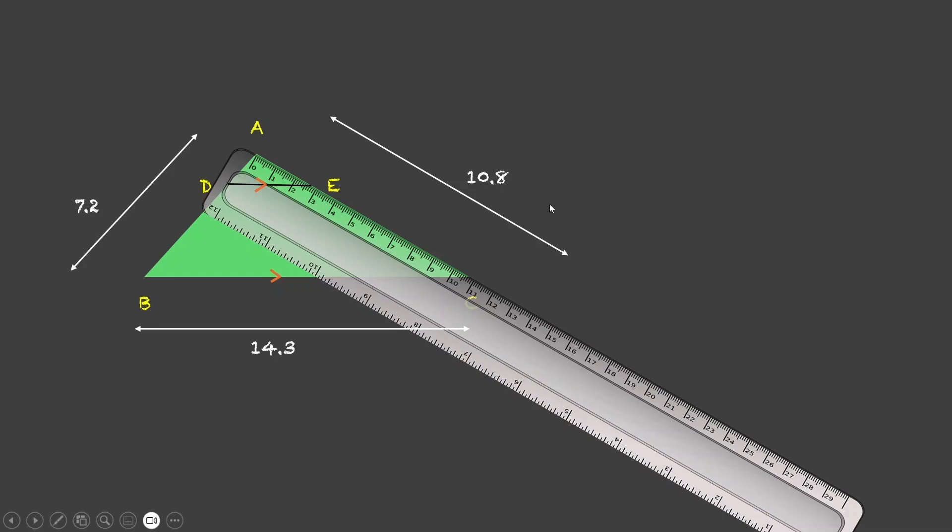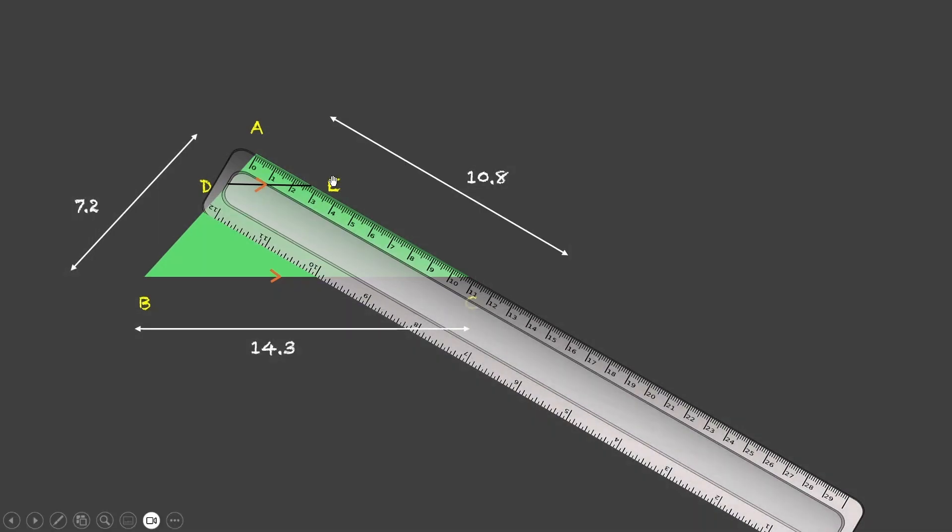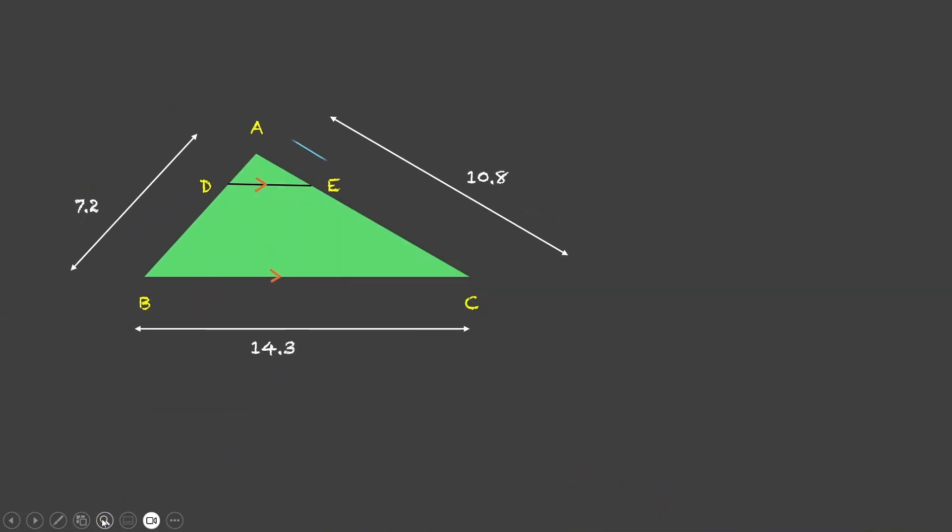We measure AE, now we want to know the accurate measurement, so this is 2.7. So AE is 2.7, that means EC is 8.1. Next, let us measure AD. This is 1.8 and DB then is 5.4.